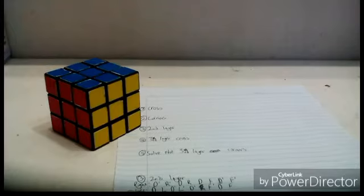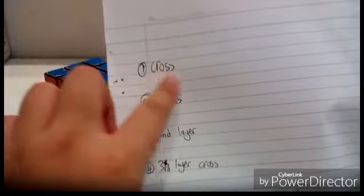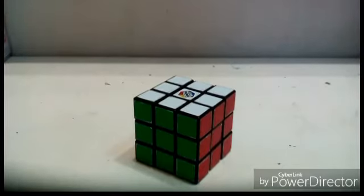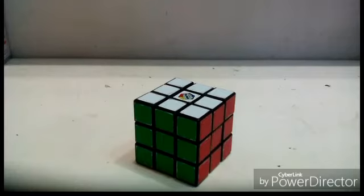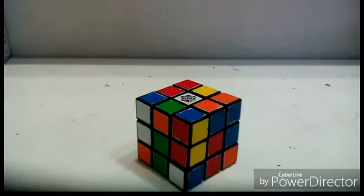Then you solve the third layer corners — it's really easy. So let's get to it. The cross looks like that. Let me mix the cube up — please hold on a sec. Okay, now it's completely mixed up.